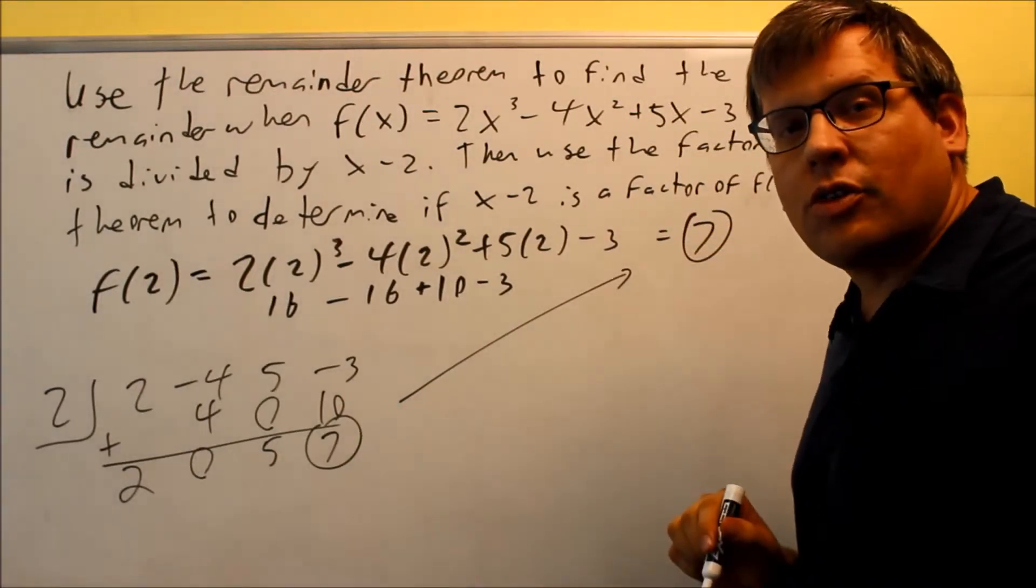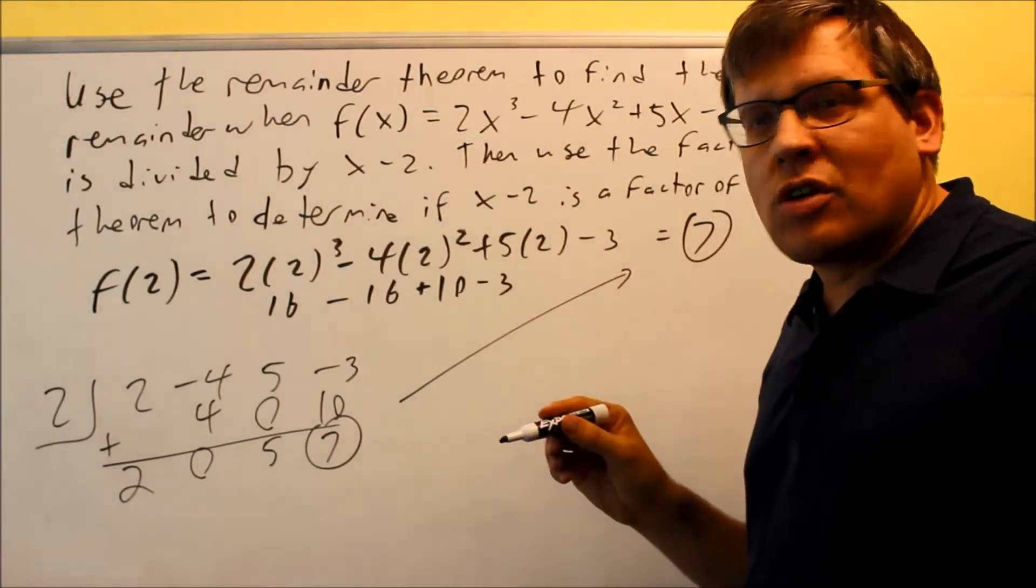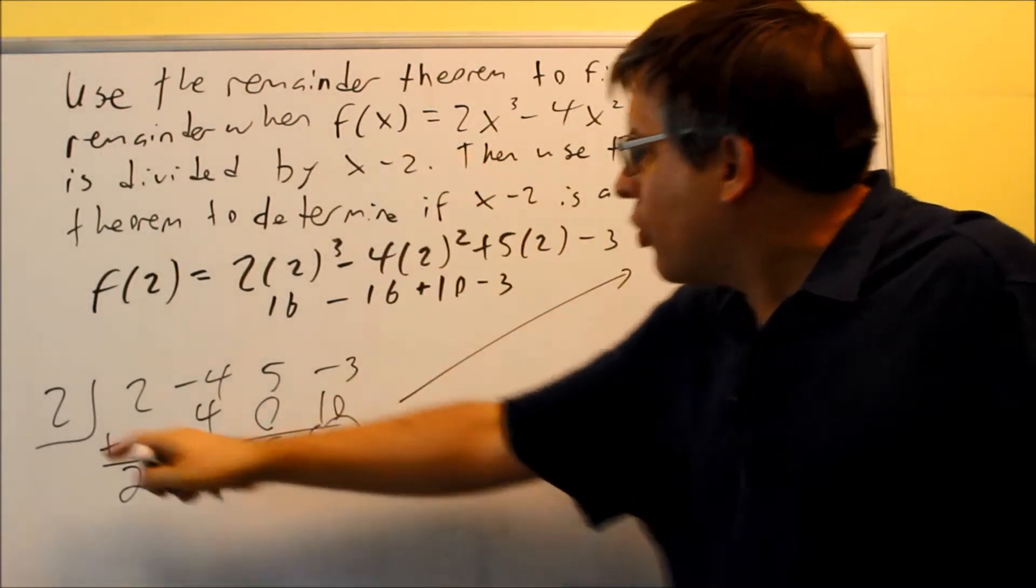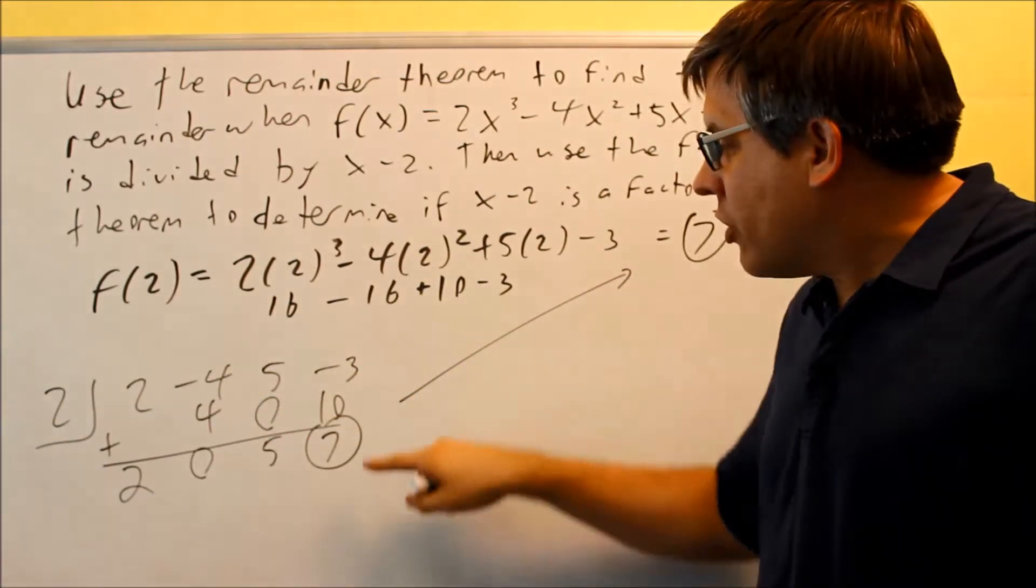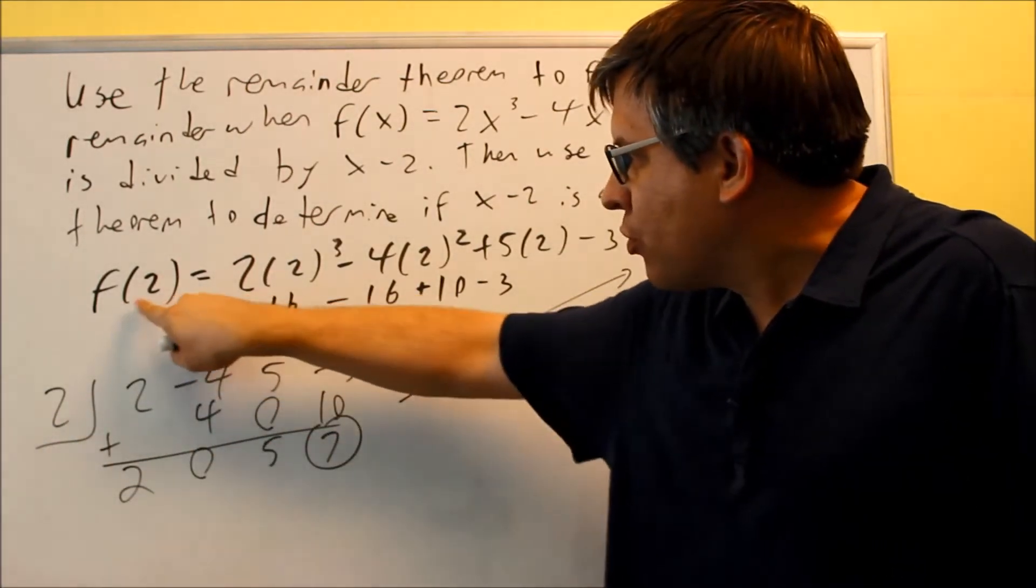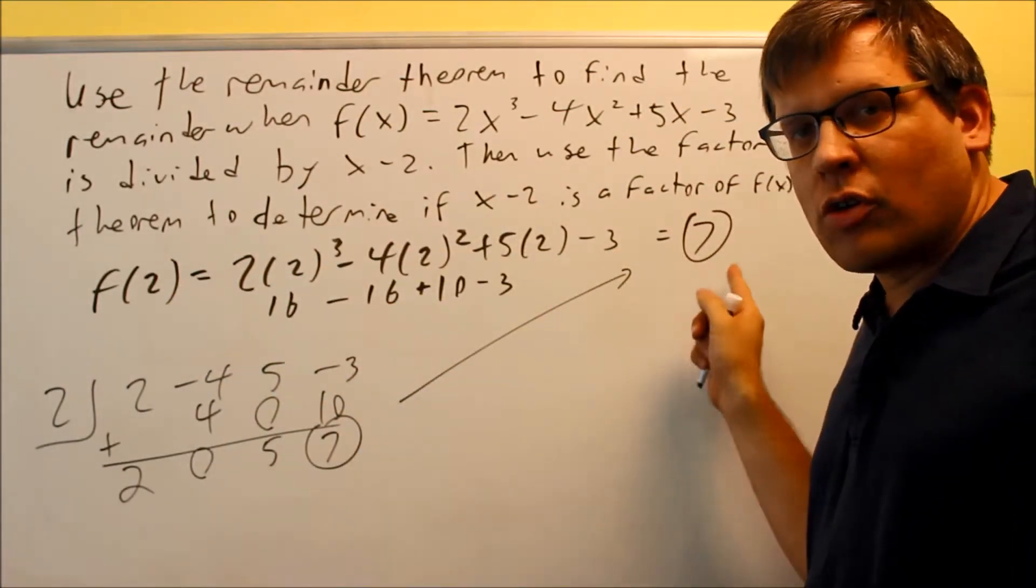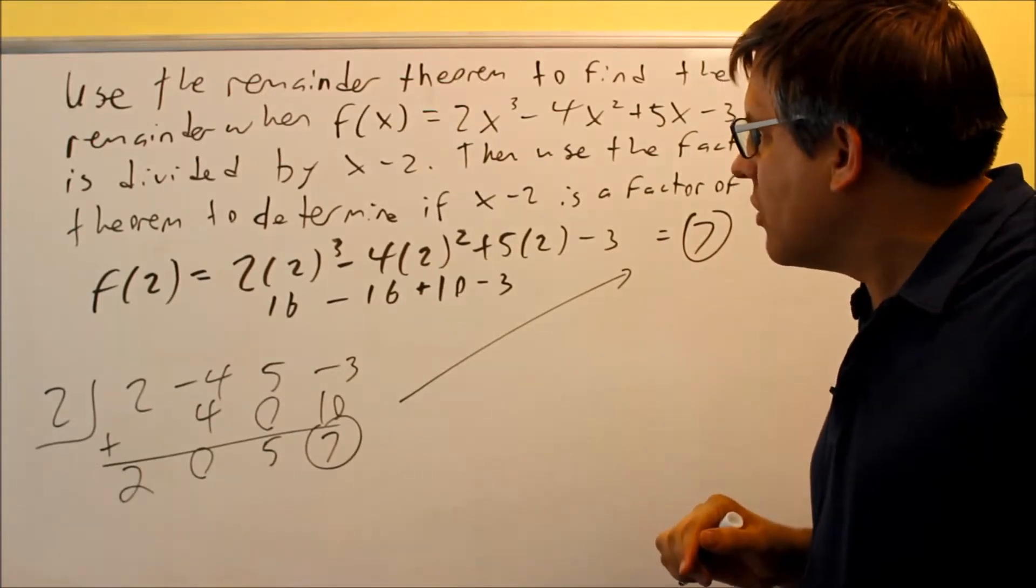That's actually what the remainder theorem says. The remainder theorem says if you take this and you do synthetic division, then whatever number you're putting into the box, whatever you get for the remainder is going to be the same as if you actually were to put that number itself into the original equation and doing it the original way that we've done before. So that's what the remainder theorem says.